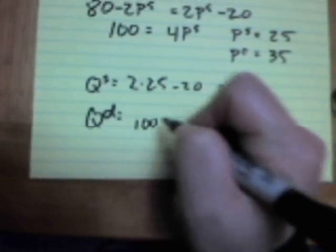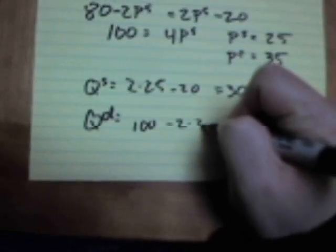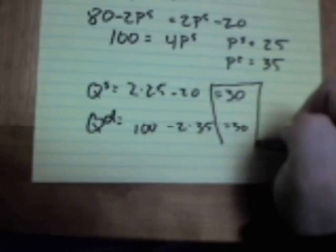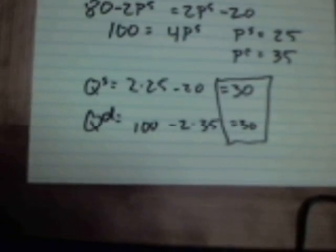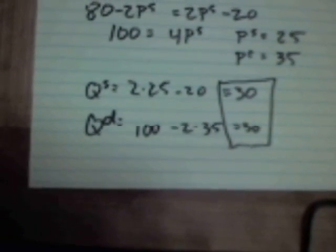Quantity demanded: 100 minus 2 times the price consumers actually pay. So that's 100 minus 2 times 35. That's 100 minus 70, 30. And again, what demand is, is equal to the quantity of supply. That's how we know we're in equilibrium.